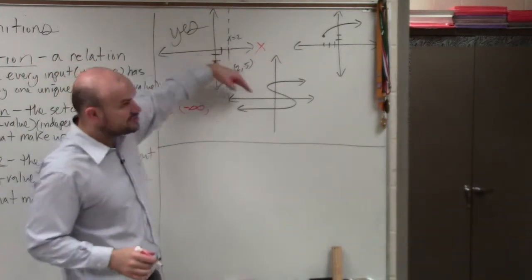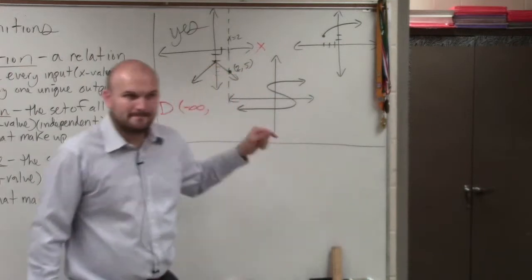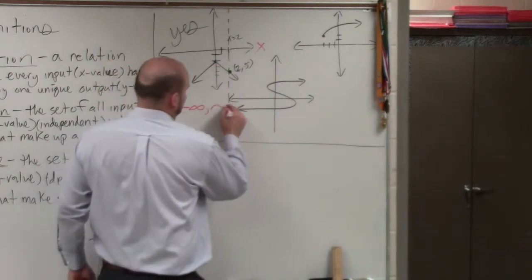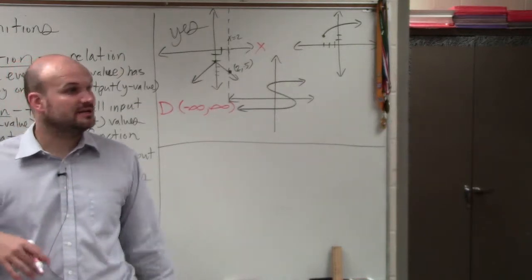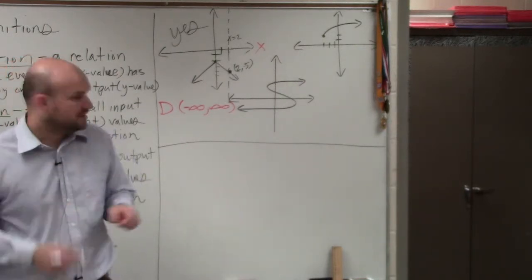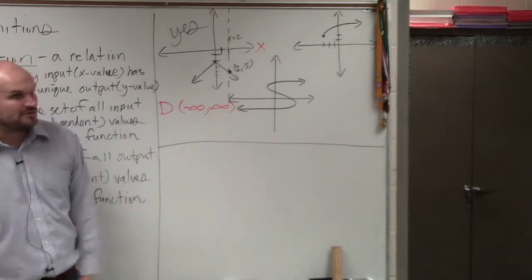So the domain is from negative infinity. And then as it goes to the right, how far is it going to go? Positive infinity. So you can write it like that, negative infinity to infinity, or we could also say all real numbers. But I'm going to get you guys used to using set notation.